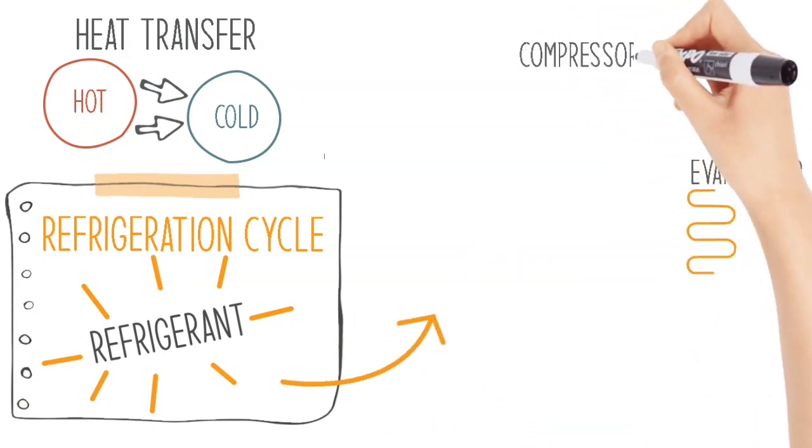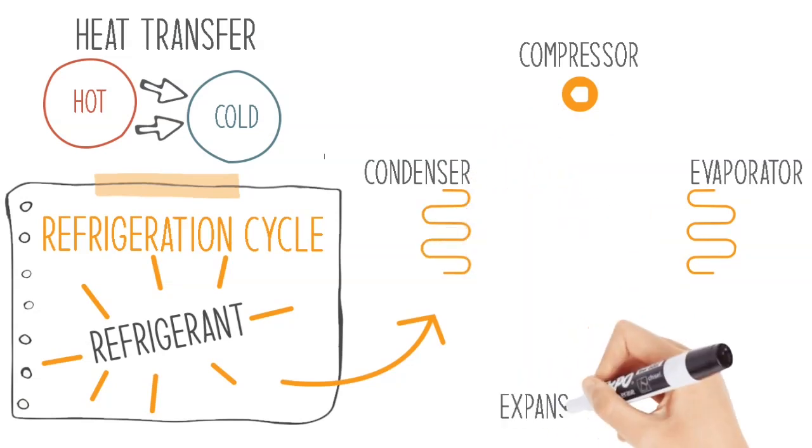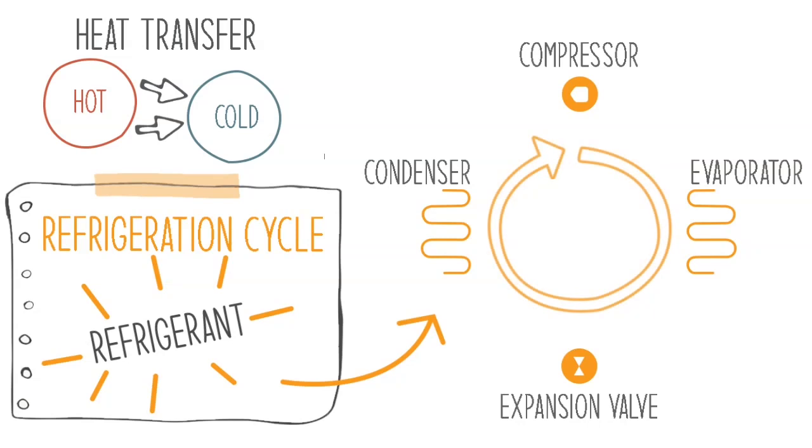the evaporator, the compressor, the condenser and the expansion valve. The refrigerant is enclosed in the loop and cycles clockwise or counterclockwise, depending on whether we are trying to heat or cool the space.